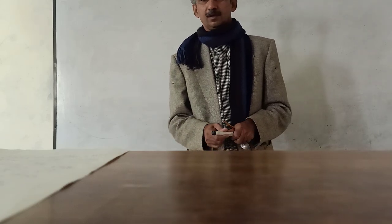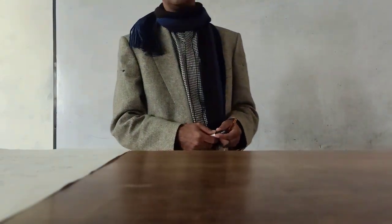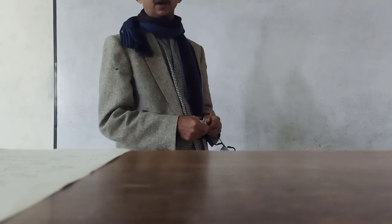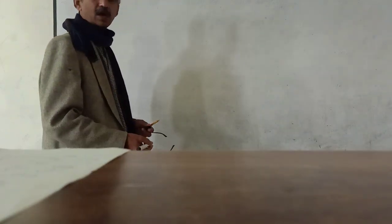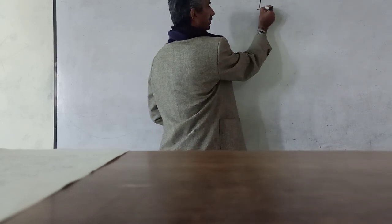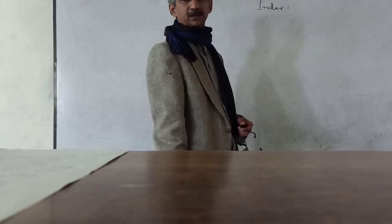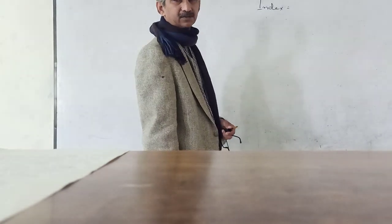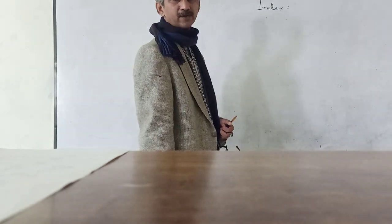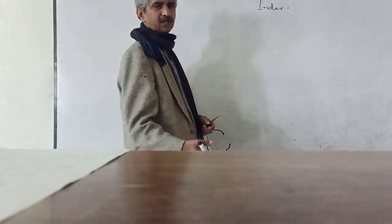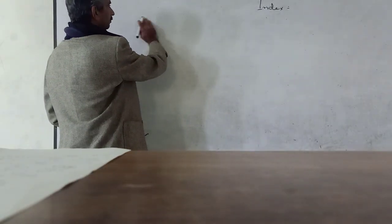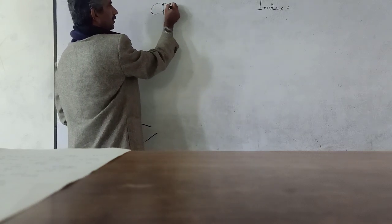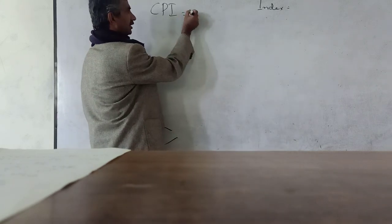Hello dear students. In this class I am going to discuss inflation measurement — how inflation is measured. First I will discuss index measurement. As in the previous classes I have discussed, a price index is a number we develop to compare future prices with past prices, to see whether there is a change in prices or not. To calculate inflation, first we measure the CPI — the Consumer Price Index.